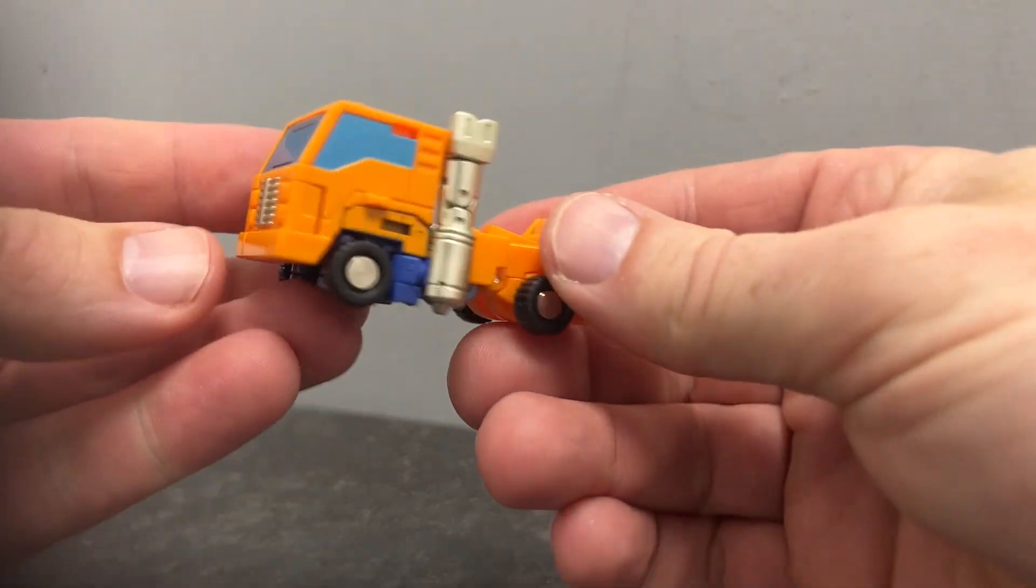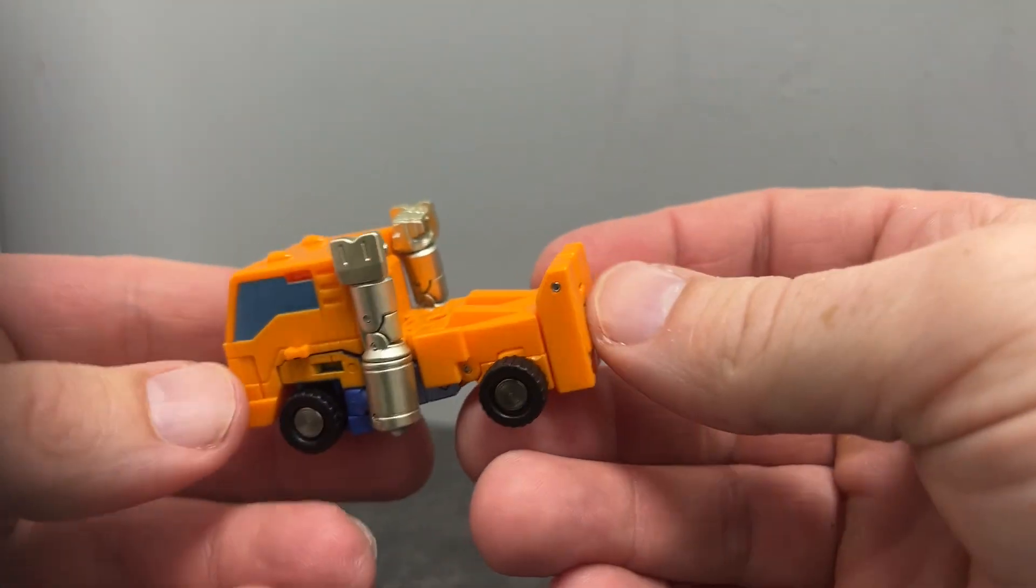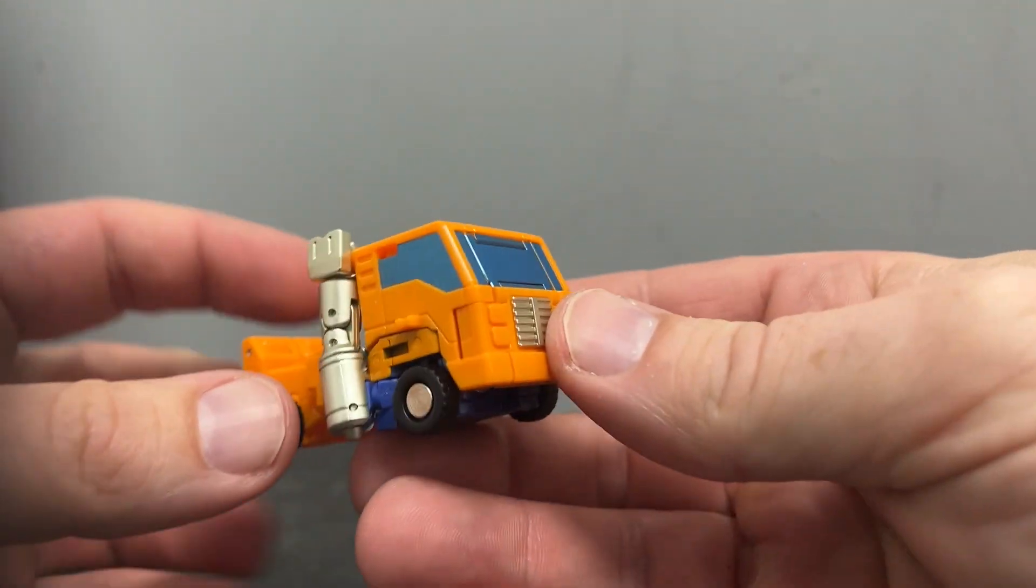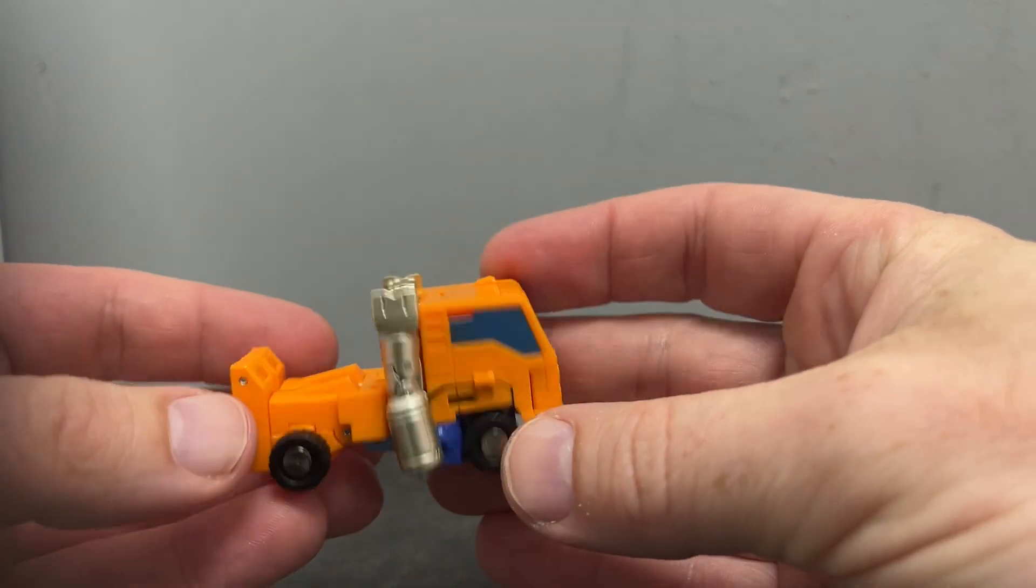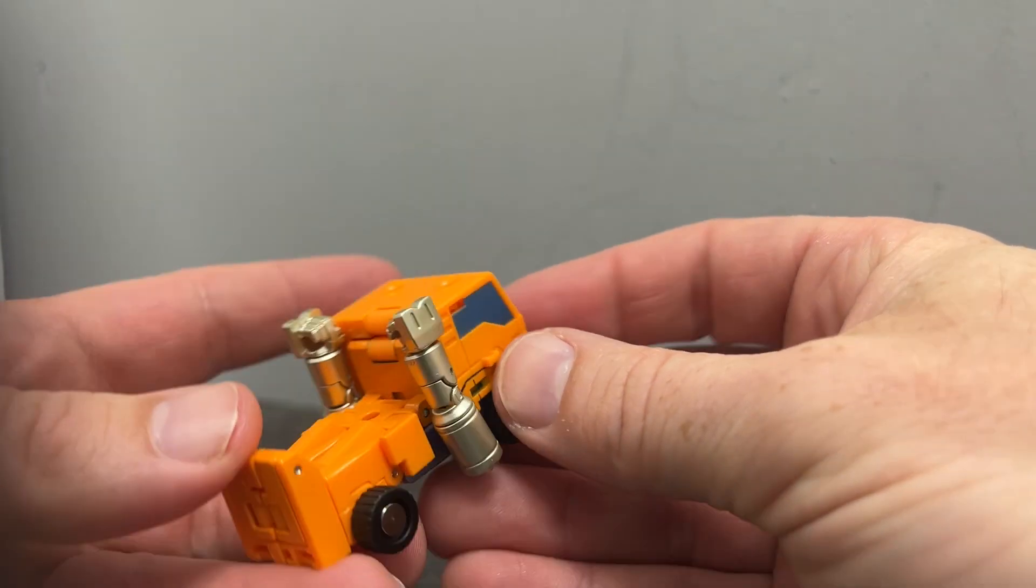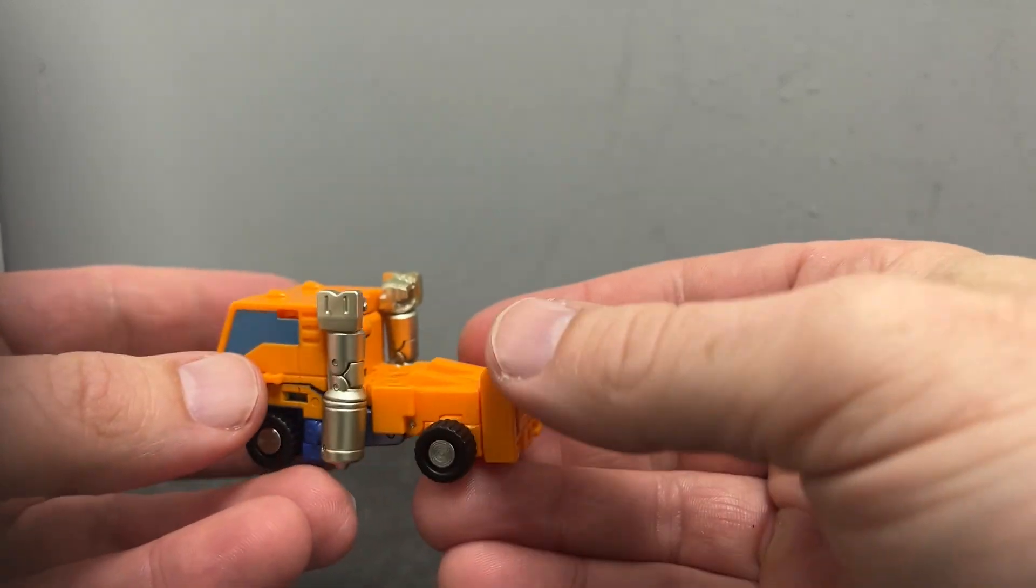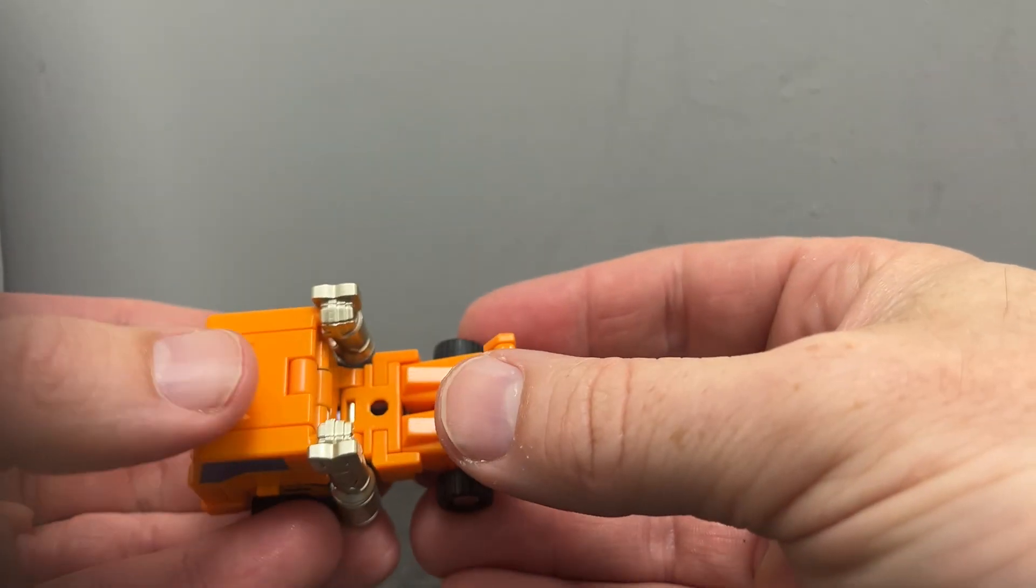Okay everybody, this is the complete transformation process for New Age's take on a Legends-scale Huffer figure. Just to remind you, only the transformation process - the review is separate and uploaded. This is going to be a tutorial, so I hope it helps you out. Now this guy is tiny as you can make out, but he's also quite intricate.